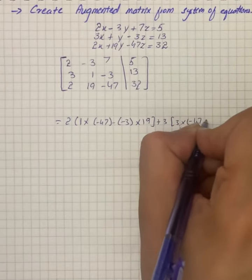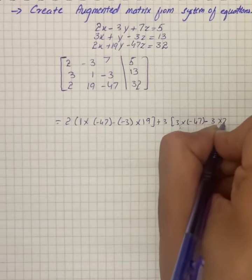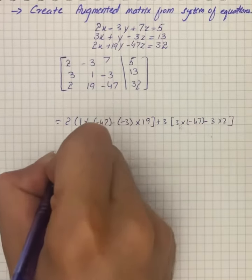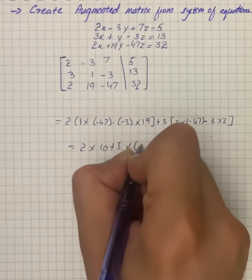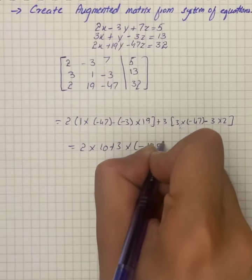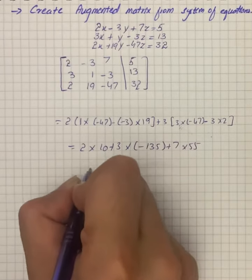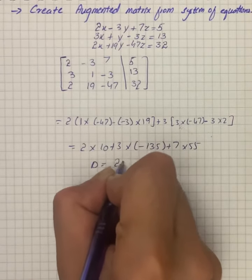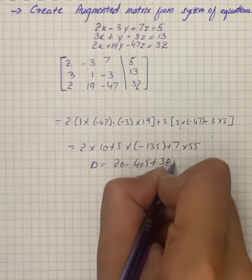In simplification, we have 2 into 10 plus 3 multiply by -135 plus 7 multiply by 55. So D is equal to 20 minus 405 plus 385, that is equal to 0.